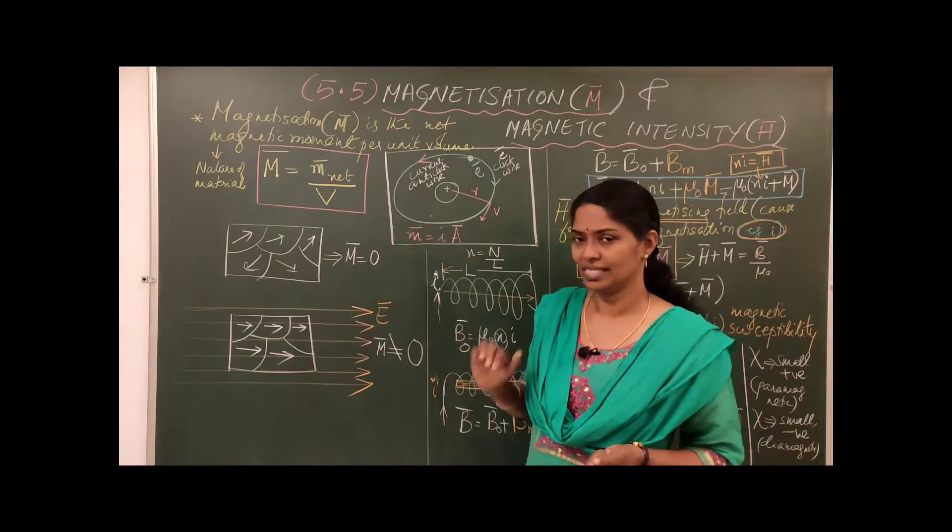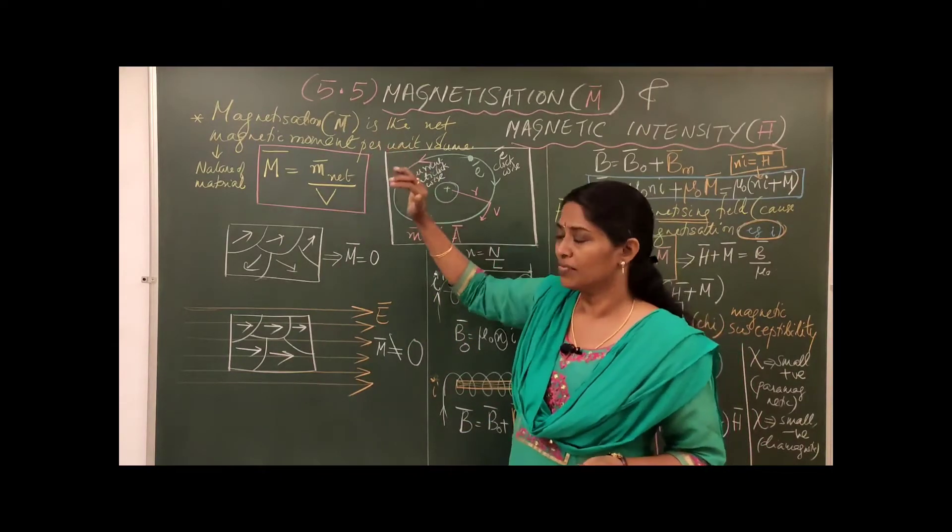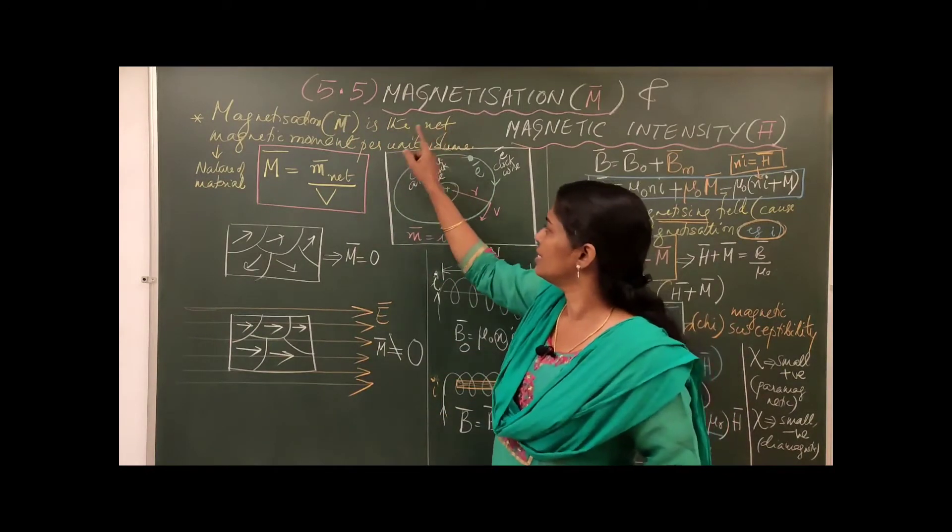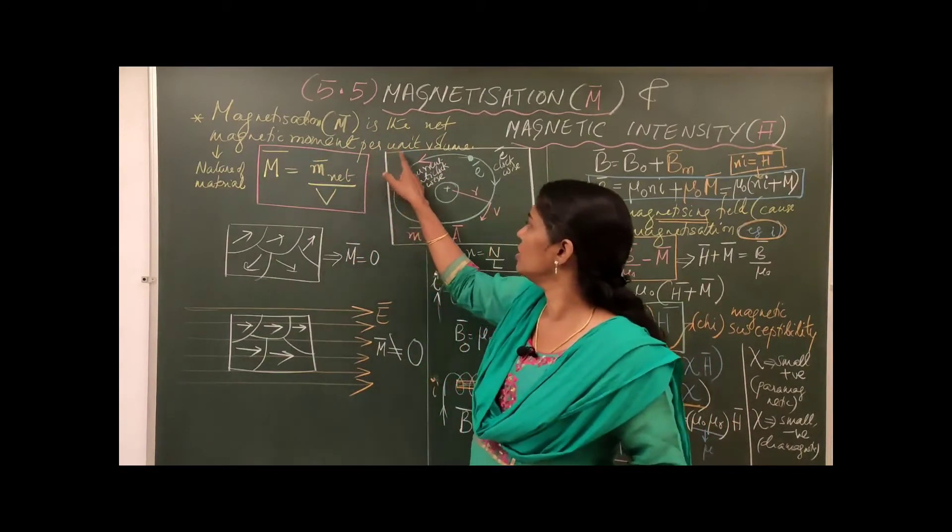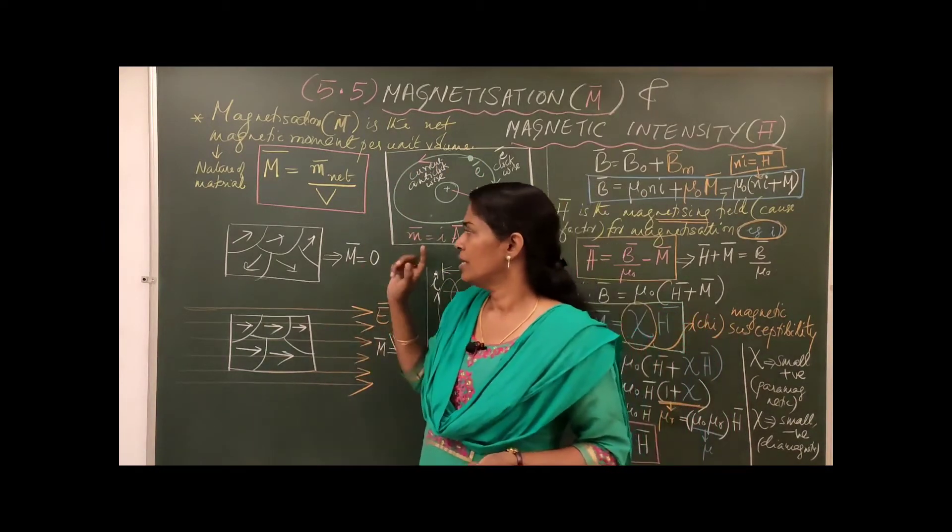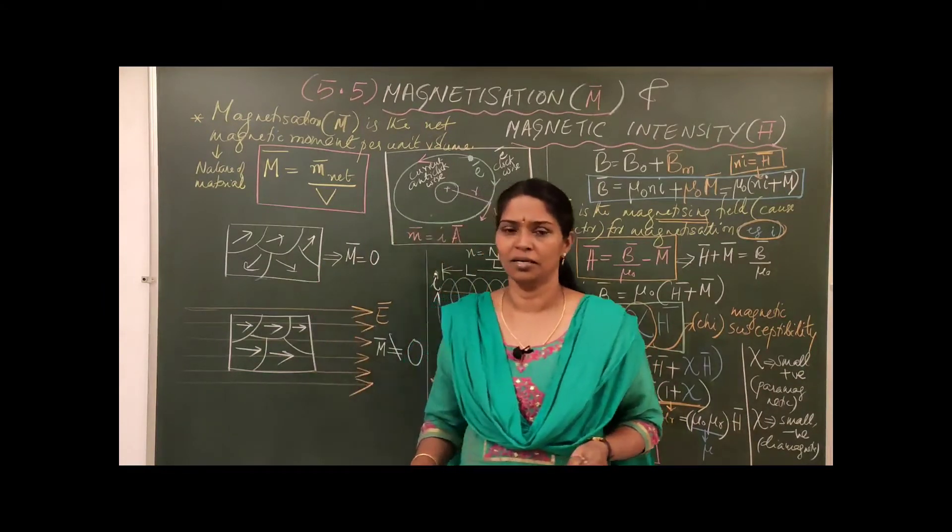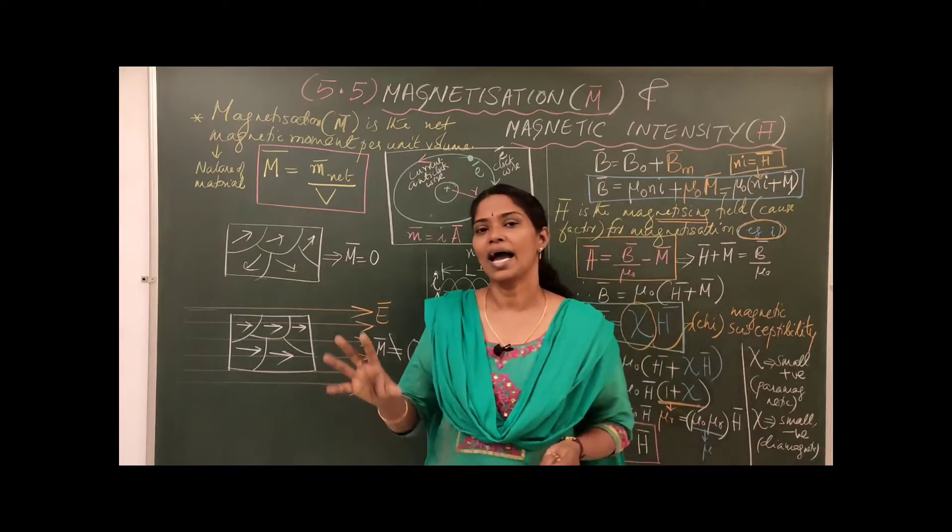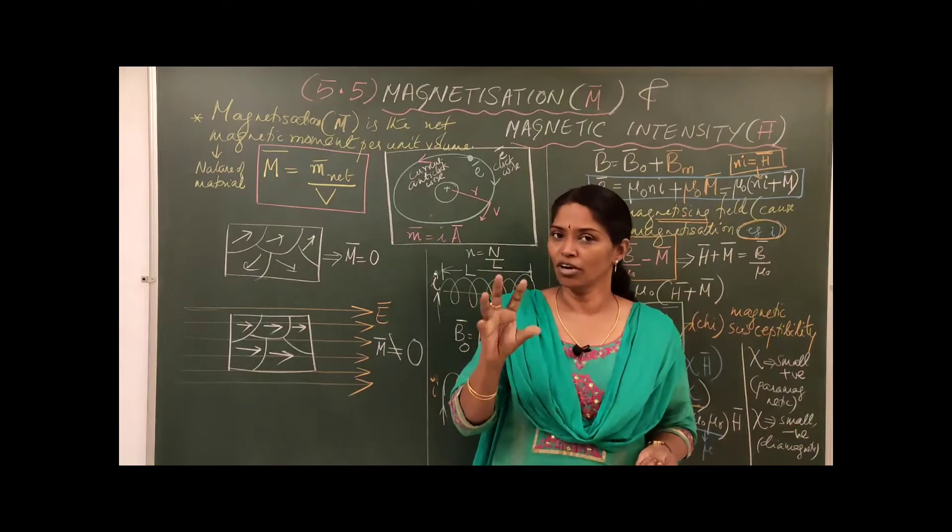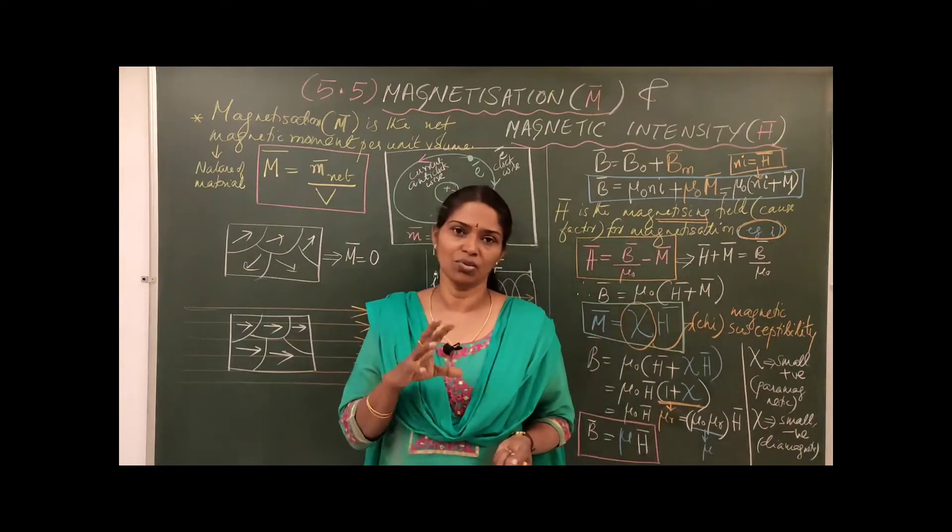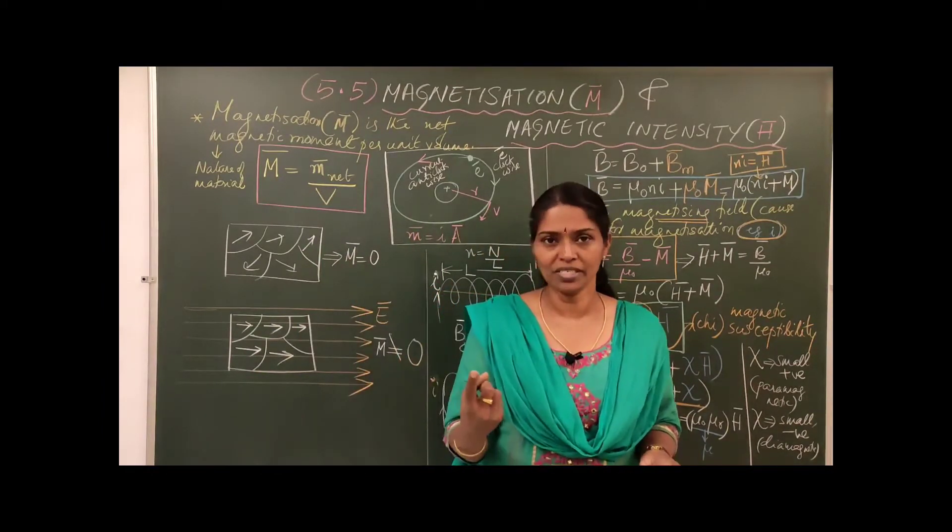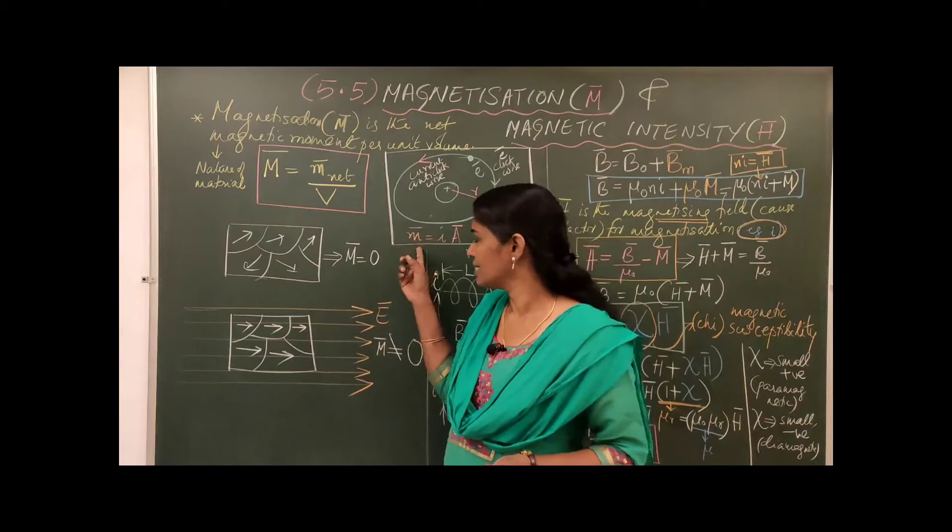Now coming to our lesson, our topic: Magnetization M bar is the net magnetic moment per unit volume. I will go to the detail. Now suppose we have a matter particle. You know matter is composed of atoms. Atoms made up of protons, neutrons, electrons and so on. Here the nucleus is bound inside. Electrons are free to move outside the nucleus in particular orbits. So that creates a magnetic moment.